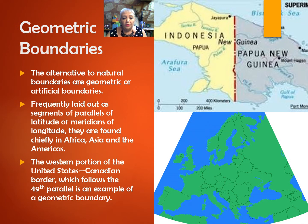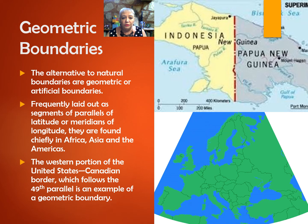Another type of boundary is called geometric boundaries. These are formed by straight lines — lines of latitude and longitude and occasional arcs — regardless of the physical and cultural features of the area. Pennsylvania and Delaware are an example of that. The Canadian-US border along the 49th parallel is a good example of a geometric boundary. These are artificial boundaries.